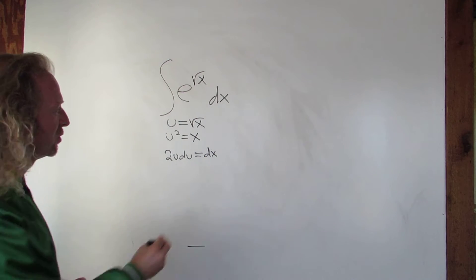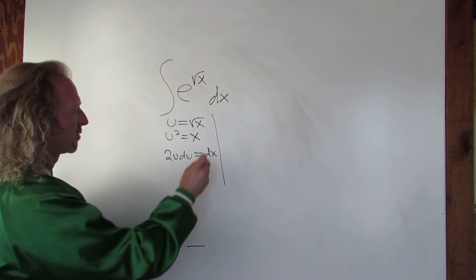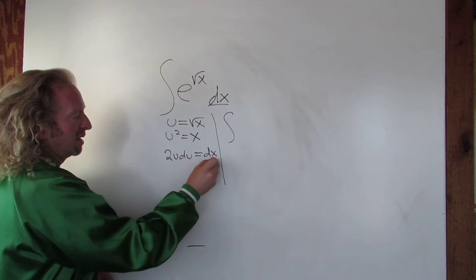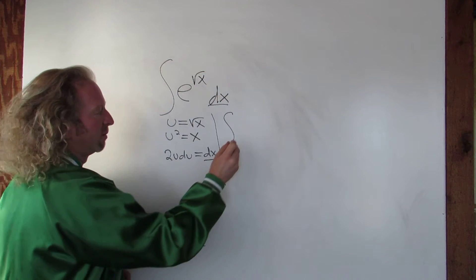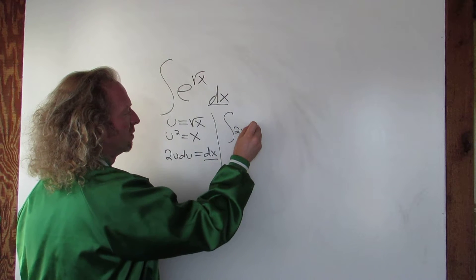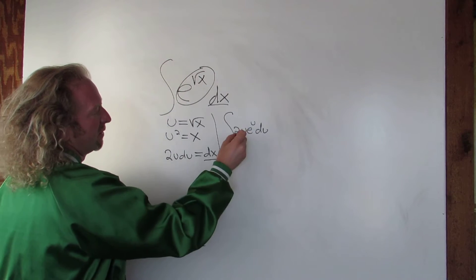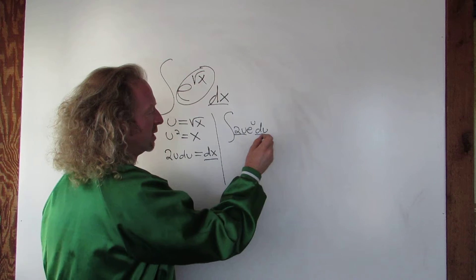Alright, now we're ready to make our substitution and let's see what happens. So we have the integral of e to the u and then dx is 2u du. So it'll be 2u e to the u du, right? Because this is our e to the u and this is our dx, 2u du.